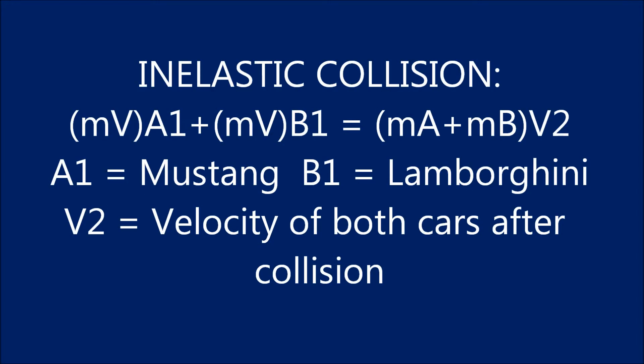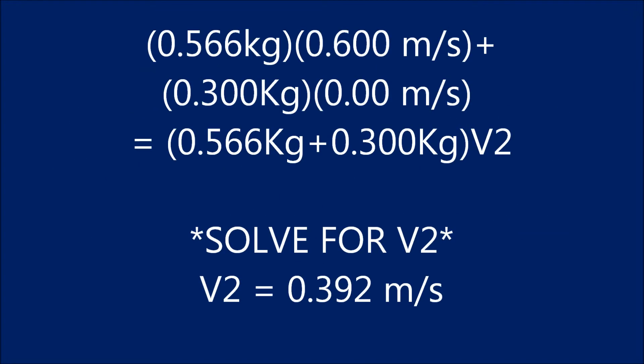When solving an inelastic collision, we use the formula MvA1 plus MvB1 is equal to MA plus MB multiplied by V2. When A1 is equivalent to the Mustang, B1 represents the Lamborghini, and V2 is equal to the velocity of both cars after the collision. Once plugging in all the information we know into the inelastic equation, we can then solve for the velocity of both the cars combined, which is also known as V2. This turns out to equal 0.392 meters per second.